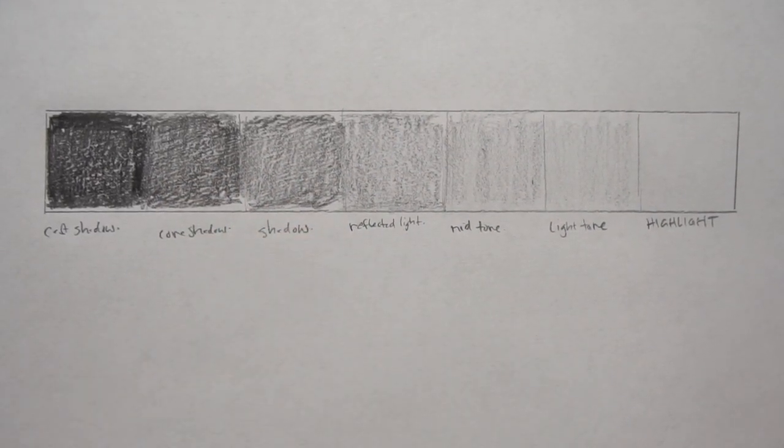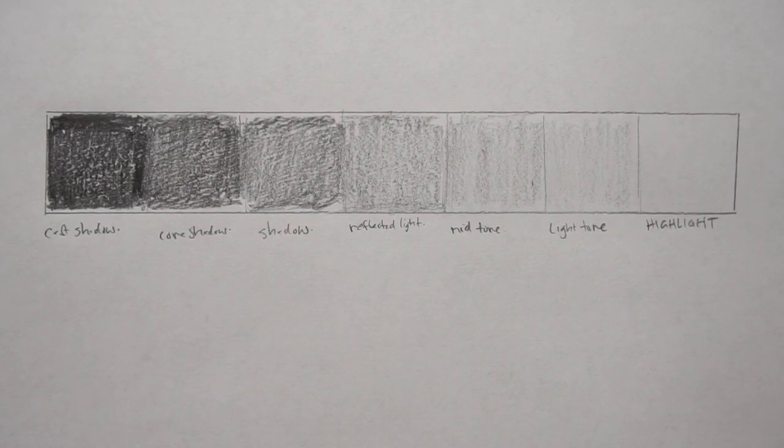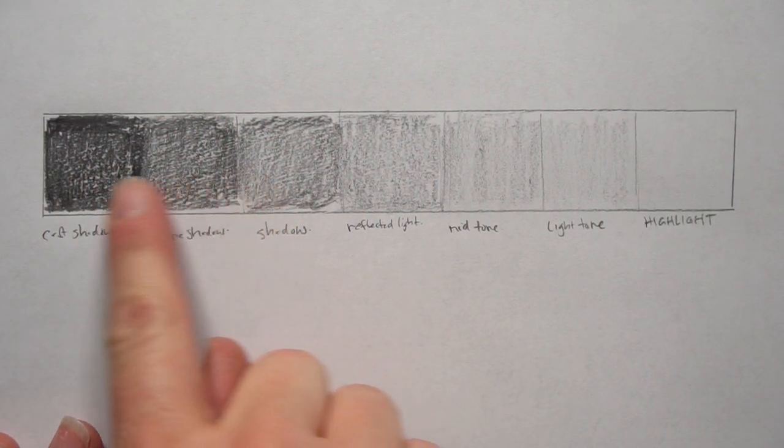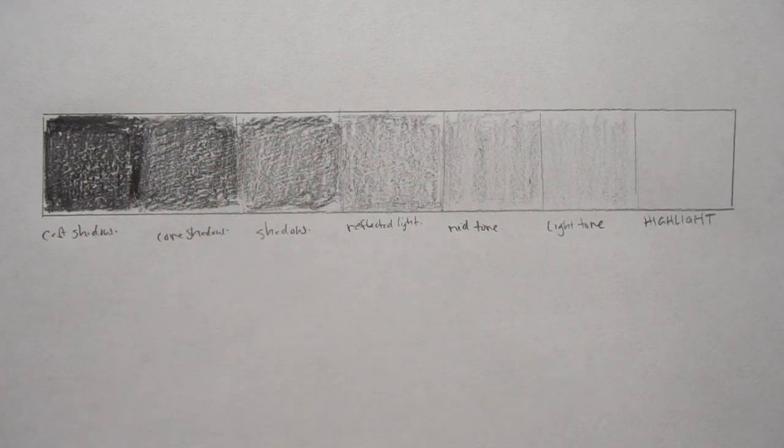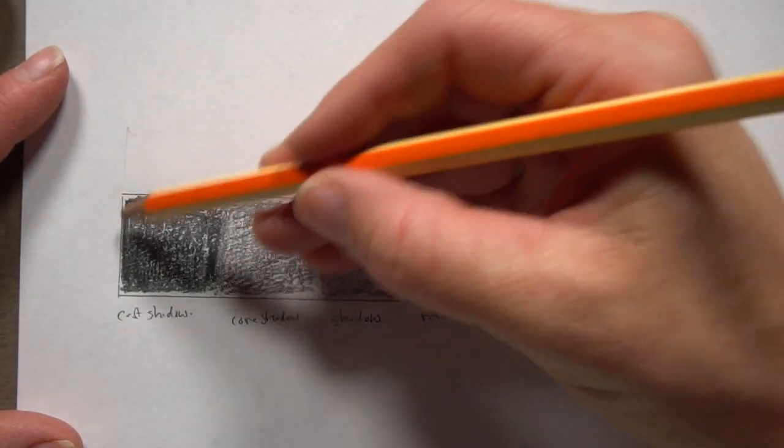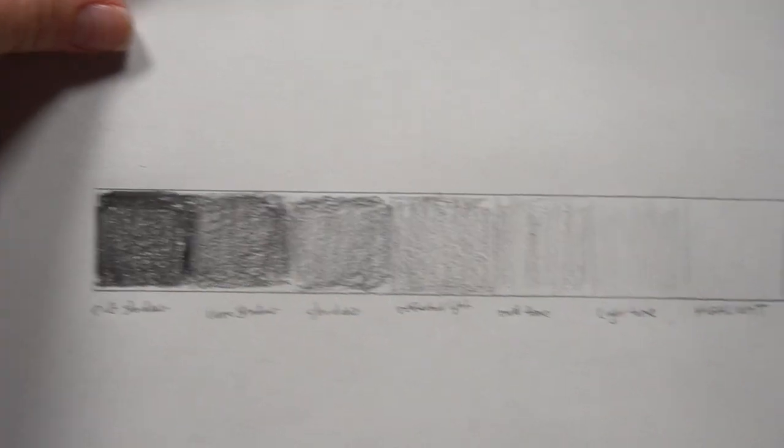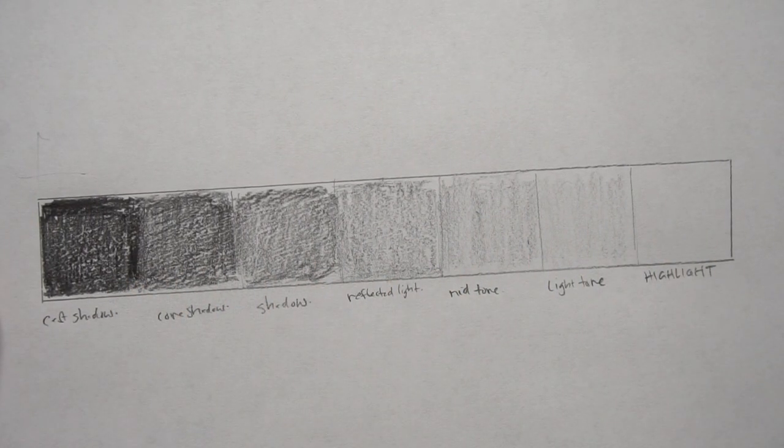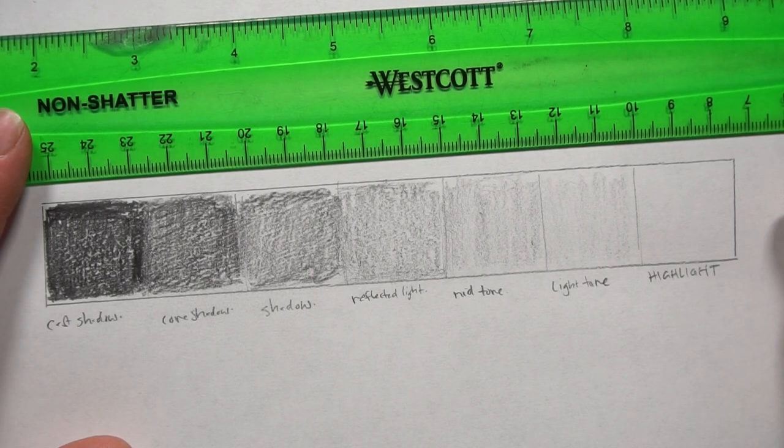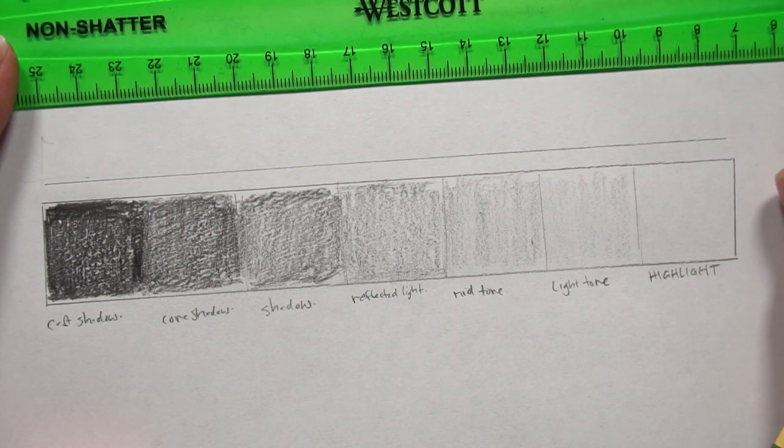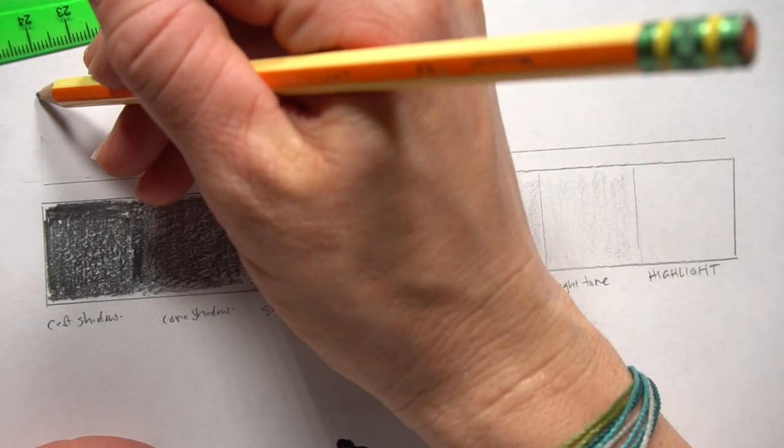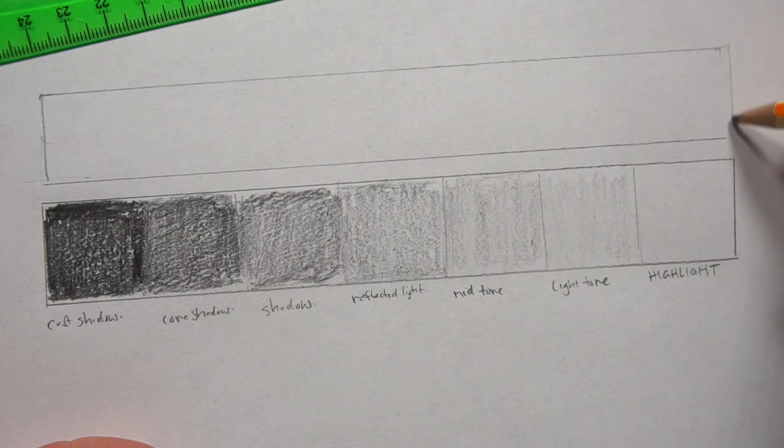But what you want to look for in a good value scale is to see if it's gradual. It shouldn't jump. Like it's pretty jumpy in here, right, from dark to this tone. So if this was a drawing and this was a shadow, I'm just going to do another value scale above it where I didn't divide it up into these squares. I think that's helpful.